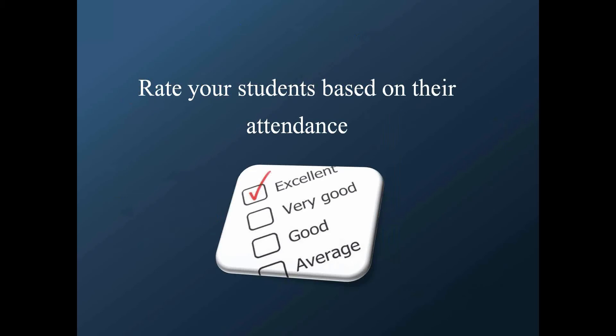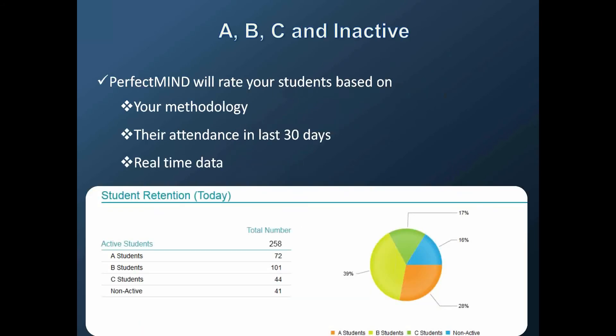Rate your students. An A student is somebody who comes to class on a regular basis — twice per week. Your B students come regularly but not so often, about once per week. Your C students are where it gets dangerous — they're coming less than once per week and getting ready to leave. Your methodology may be different; you can adjust that in PerfectMind. Our rule of thumb is when somebody's coming once per week, you want to keep them on your radar. The idea is to contact the C students.